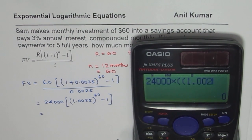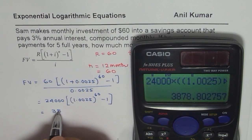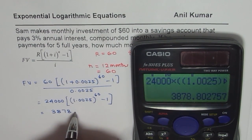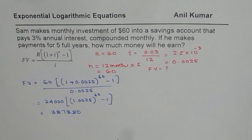1.0025, bracket close, power is 60. Then we do minus 1, and this bracket close for the outer bracket.